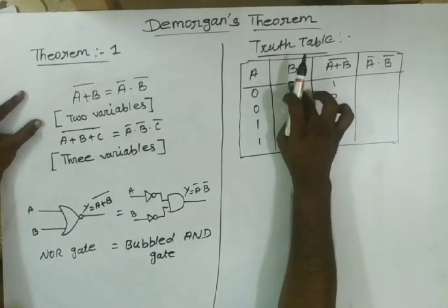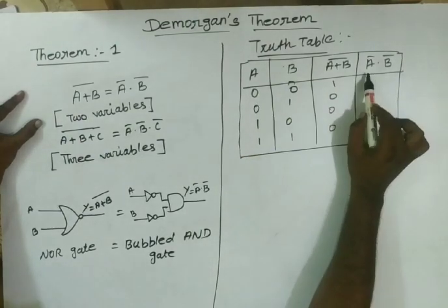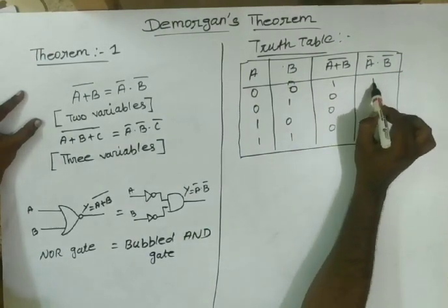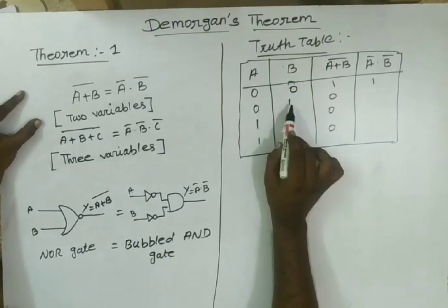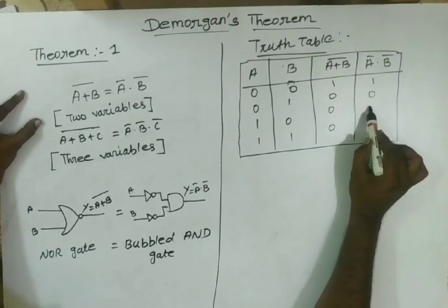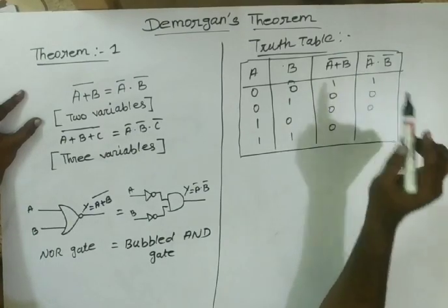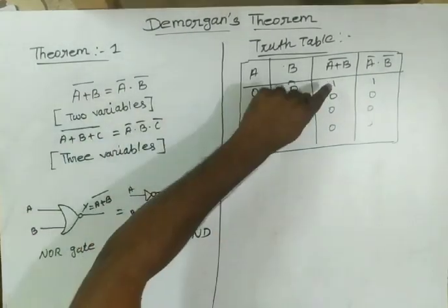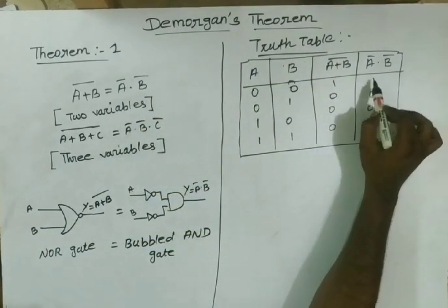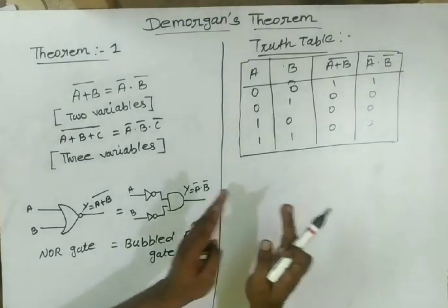Right hand side: A bar dot B bar. For A=0, B=0: A bar=1, B bar=1, 1 into 1 = 1. For A=0, B=1: A bar=1, B bar=0, 1 into 0 = 0. For A=1, B=0: A bar=0, B bar=1, 0 into 1 = 0. For A=1, B=1: A bar=0, B bar=0, 0 into 0 = 0. Left hand side: 1,0,0,0. Right hand side: 1,0,0,0. Same values — Theorem 1 verified.